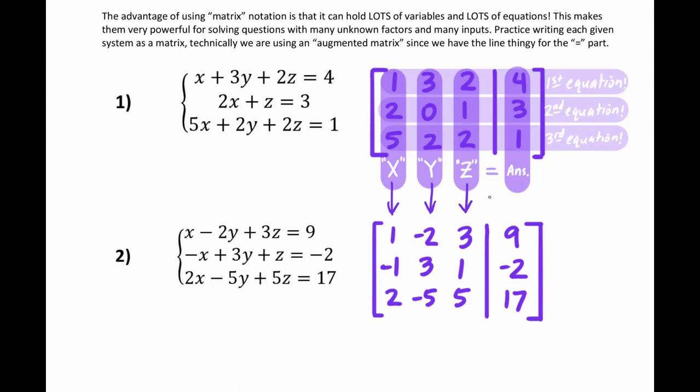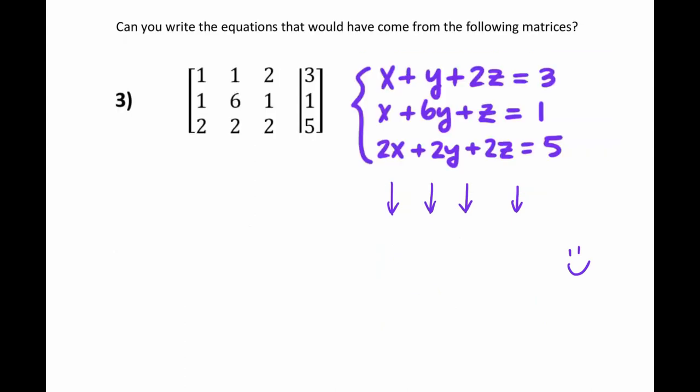Now, question 3 is actually going in the reverse direction from this. If I gave you a matrix, can you understand what question it would have came from? What equations make up that matrix representation? And so you can see 1, 1, 2, and then on the other side of the line is the number 3. That we would assume, if it's in X, Y, Z order, and typically they are, it's nice to keep things in alphabetical order. That would say 1X plus 1Y plus 2Z equals 3. So X plus Y plus 2Z equals 3 is the same thing without the ones. If you go through to the second row, the second equation, that would say X plus 6Y plus Z equals 1. And then the last equation on the bottom row is 2X plus 2Y plus 2Z equals 5.